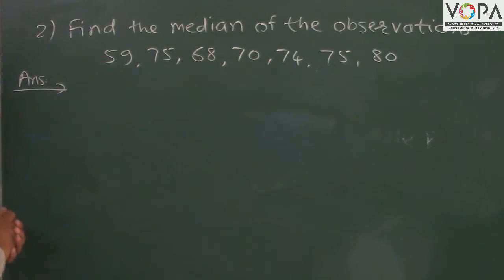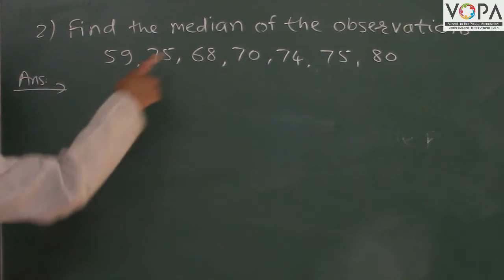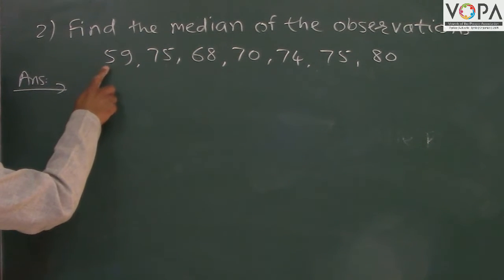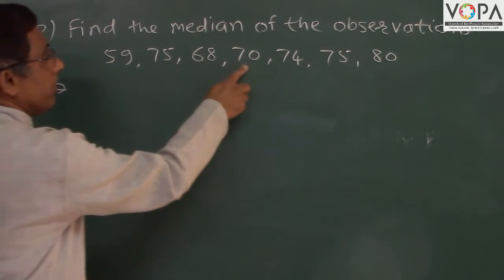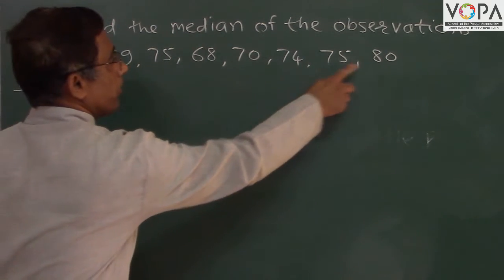Now we take example number 2. Find the median of the observations. We have given these observations: 59, 75, 68, 70, 74, 75, 80.